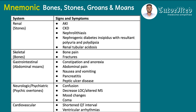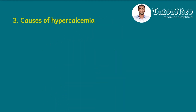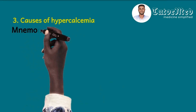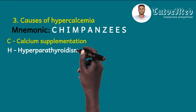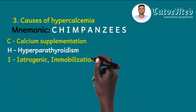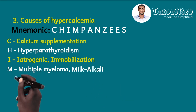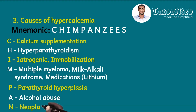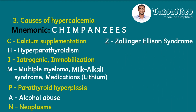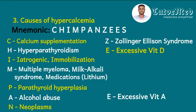Question three asked for causes of hypercalcemia. The mnemonic found is CHIMPANZEES: C — calcium supplementation, H — hyperparathyroidism, I — iatrogenic (excessive calcium), I — immobilization (prolonged immobilization raises calcium), M — multiple myeloma and milk-alkali syndrome and medications like lithium, P — parathyroid hyperplasia, A — alcohol abuse, N — neoplasms, Z — Zollinger-Ellison syndrome, E — excessive vitamin D, E — excessive vitamin A, S — sarcoidosis.